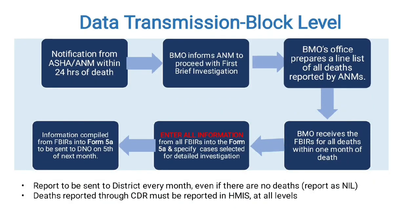Data transmission process: first, notification within 24 hours of death. Then BMO informs ANM to proceed with the first brief investigation. BMO office prepares a line list. BMO receives FBIRs of all deaths within one month of death. All information from FBIRs is entered into Form 5A, specifying cases selected for detailed investigation. All information compiled from FBIRs into Form 5A to be sent to DNO by the 5th of the next month. Reports to be sent to district every month even if there are no deaths.